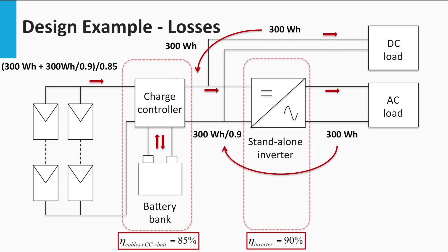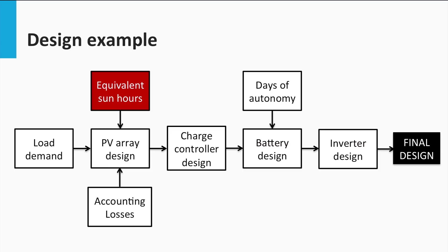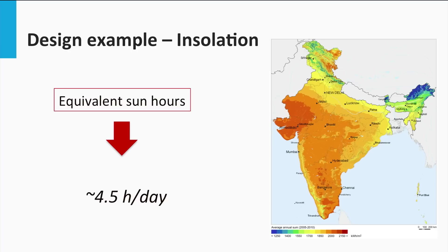This is calculated to be 745 Wh. Thus, the PV array on a regular day should be able to supply 745 Wh of photo-generated energy. The next thing to consider is the equivalent sun hours, which depends on the irradiance the chosen location enjoys. In this example, the place is located in India and enjoys an average of 4.5 equivalent sun hours.